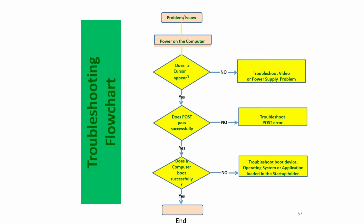This is a troubleshooting flowchart. If you have a problem, first turn the computer on. If no cursor appears, troubleshoot the video or power supply. If POST passes successfully and the computer boots properly, check whether the OS and applications load normally. If POST fails, troubleshoot the POST error. If the computer does not boot properly, troubleshoot the device, operating system, or applications loaded in the startup folder.